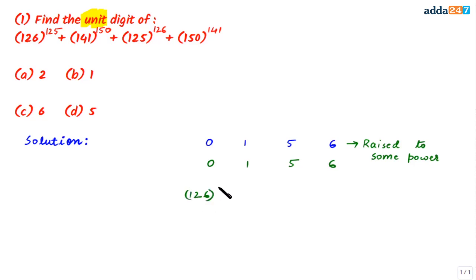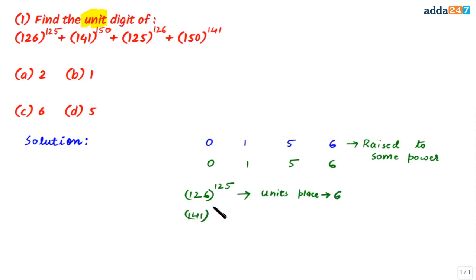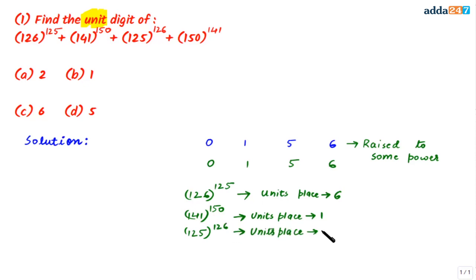since 126 has 6 at the units place, when raised to the power 125, the result will also have 6 at the units place. Similarly, for 141 raised to power 150, the units digit is 1, so the result has 1. For 125 raised to power 126, the units digit stays 5. And for 150 raised to power 141, the units digit is 0.